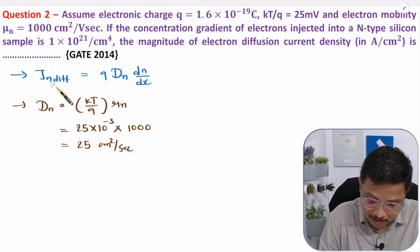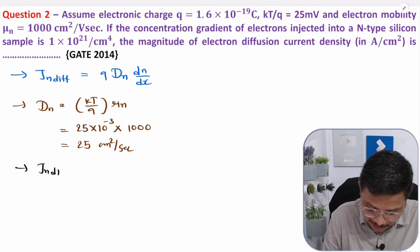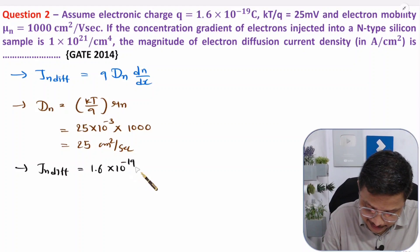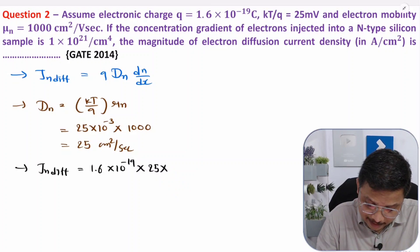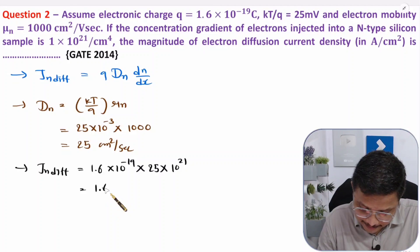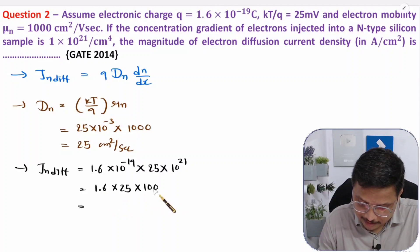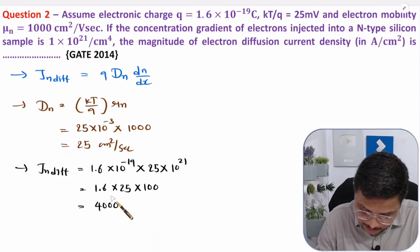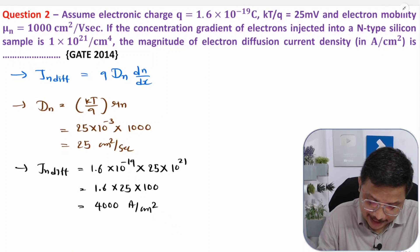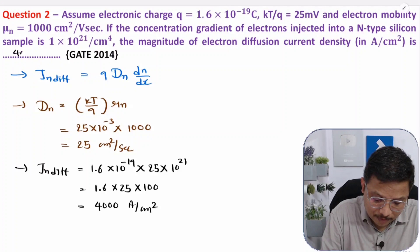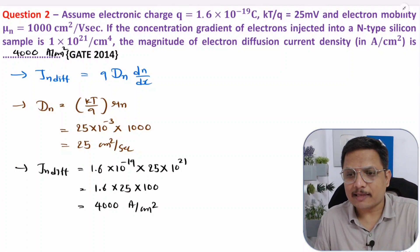Now we have D_n, dn/dx, and q, so we can calculate the diffusion current: J_n(diffusion) = 1.6×10^-19 × 25 × 10^21. Solving: 1.6 × 25 × 100 = 4000. So the answer is 4000 ampere per centimeter square. All units are in centimeter, confirming the answer is in ampere per centimeter square.